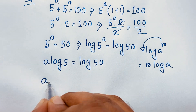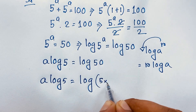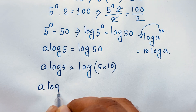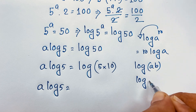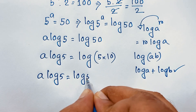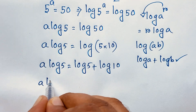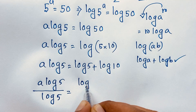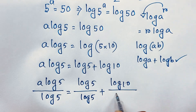Now, a log 5 equals log 50. We know that 50 is 5 times 10. Then a log 5 equals log 5 times 10. And we know that log a times b equals log a plus log b. If I apply this math formula, it will be log 5 plus log 10. Then I divide both sides by log 5.